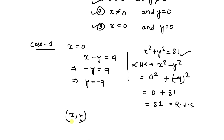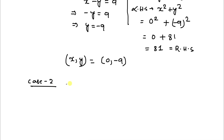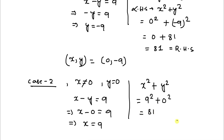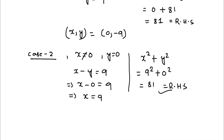In case 2, x is not equal to 0 and y equals 0. From equation 1: x minus 0 equals 9, so x equals 9. Checking equation 2: x squared plus y squared equals 9 squared plus 0 squared equals 81, which equals the right-hand side of equation 2. So x equals 9 and y equals 0 also satisfies both equations, giving the pair (9, 0).